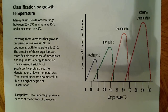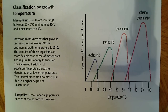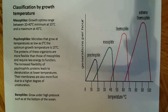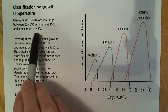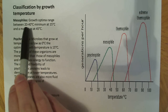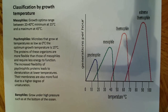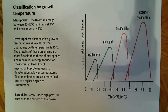The classification by growth temperature: mesophiles grow in an optimum range between 20 and 40 degrees Celsius, with a minimum of 15 degrees Celsius and a maximum of 45 degrees Celsius. They're defined by this range of 15 to 45 degrees. Somewhere between 20 and 40 degrees is where you'll find the maximum rate of growth — maximum cell division within that range.